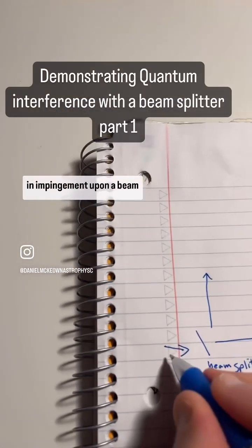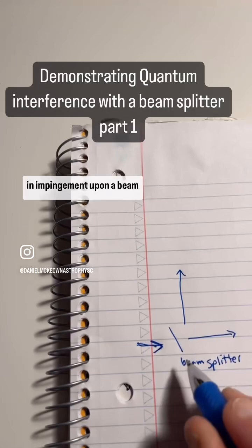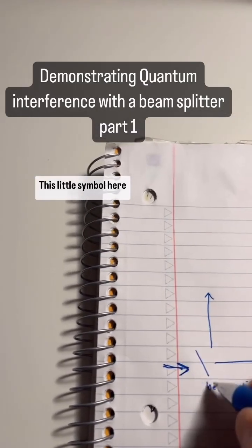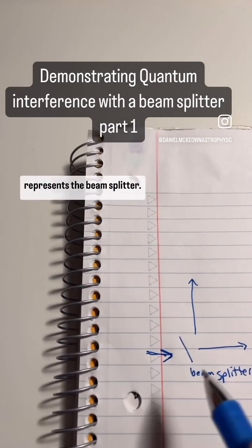Now we start with a photon coming in impinging upon a beam splitter. This little symbol here represents the beam splitter.